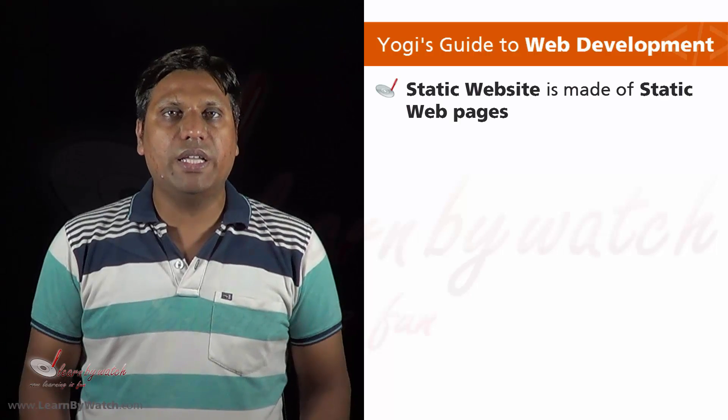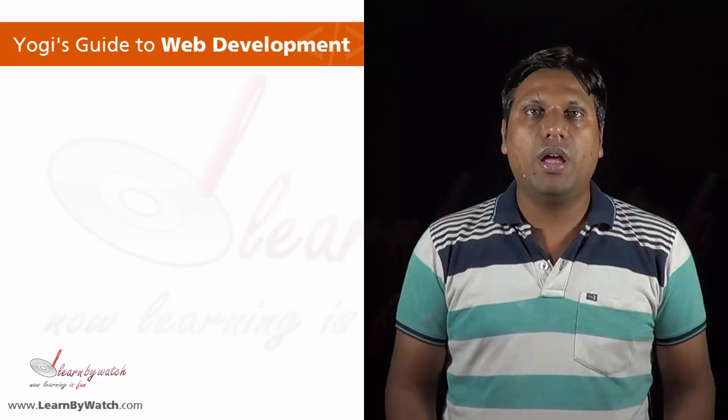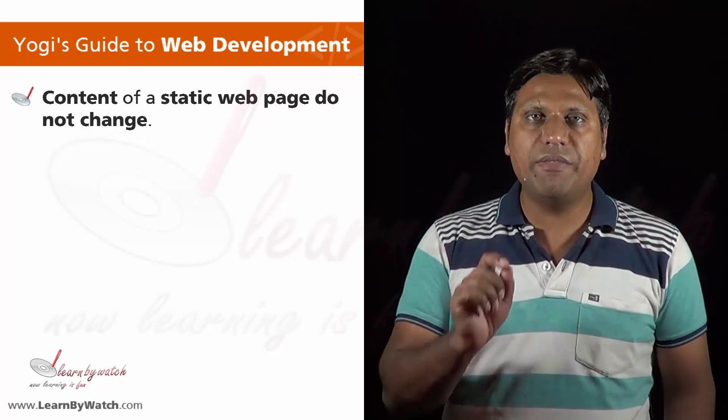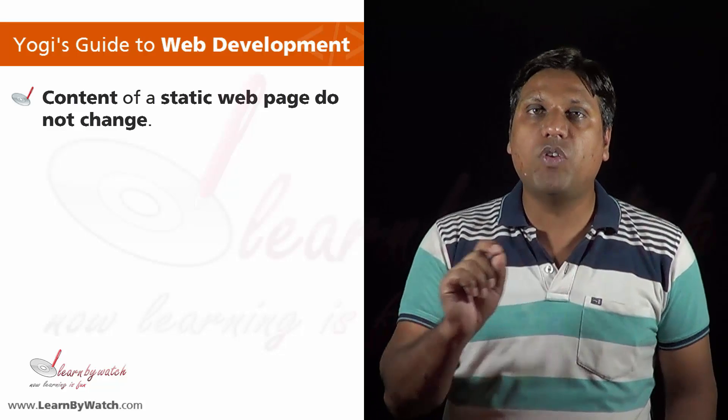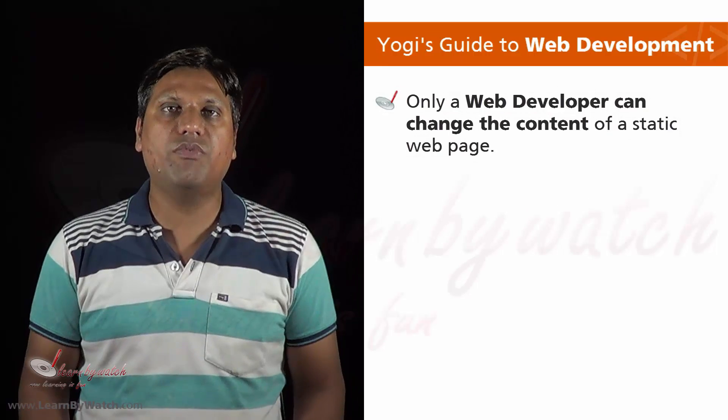From my previous videos, you have learned that there are two types of websites: static or dynamic. A static website contains all static pages, and all the information written on a static web page is written by a web developer. So all information — whether it's text, video, audio, or any other multimedia element — will be placed by the web developer. All people accessing the same web page at the same time will see the same information, and if you want to change it, you need to do so manually.